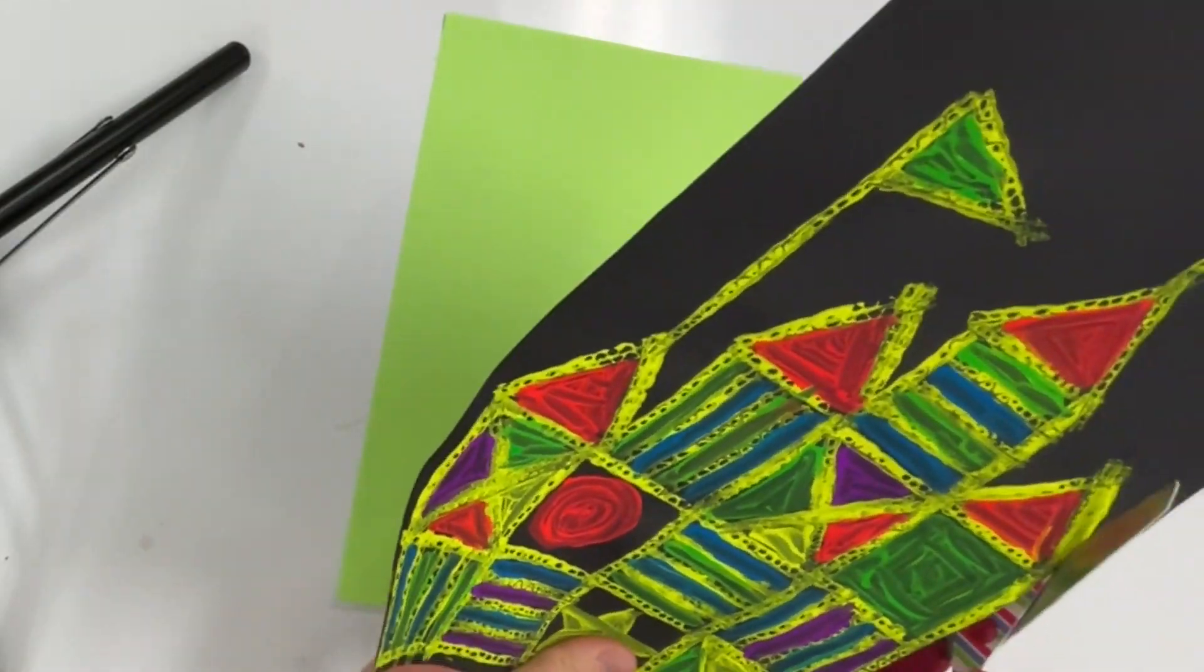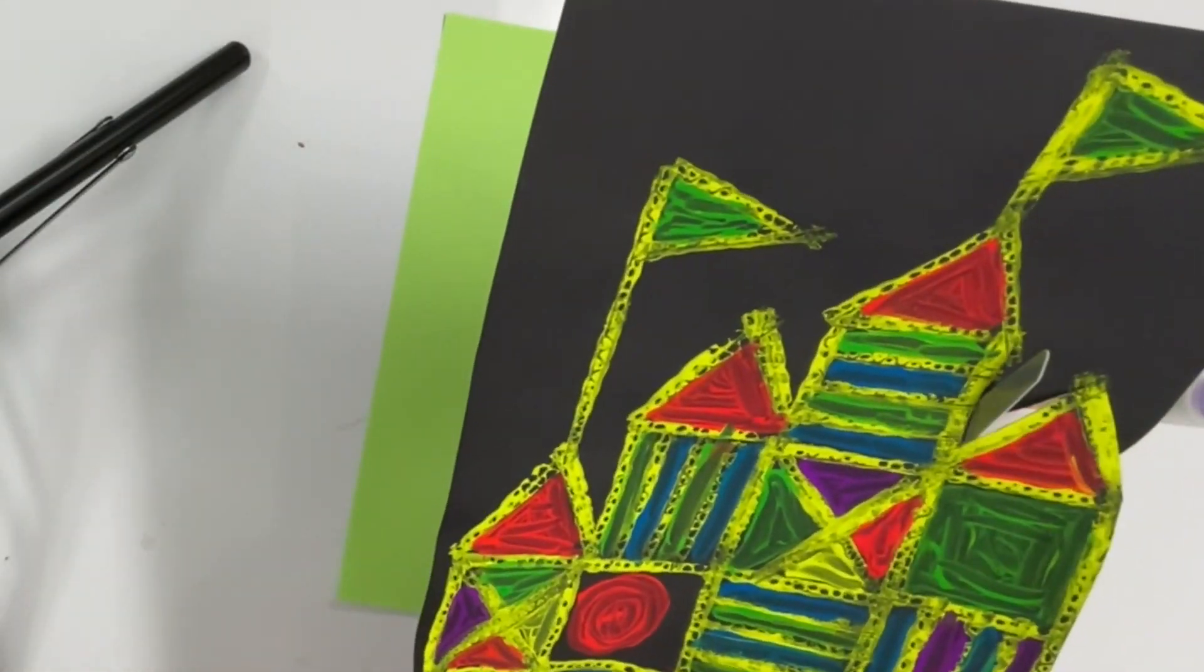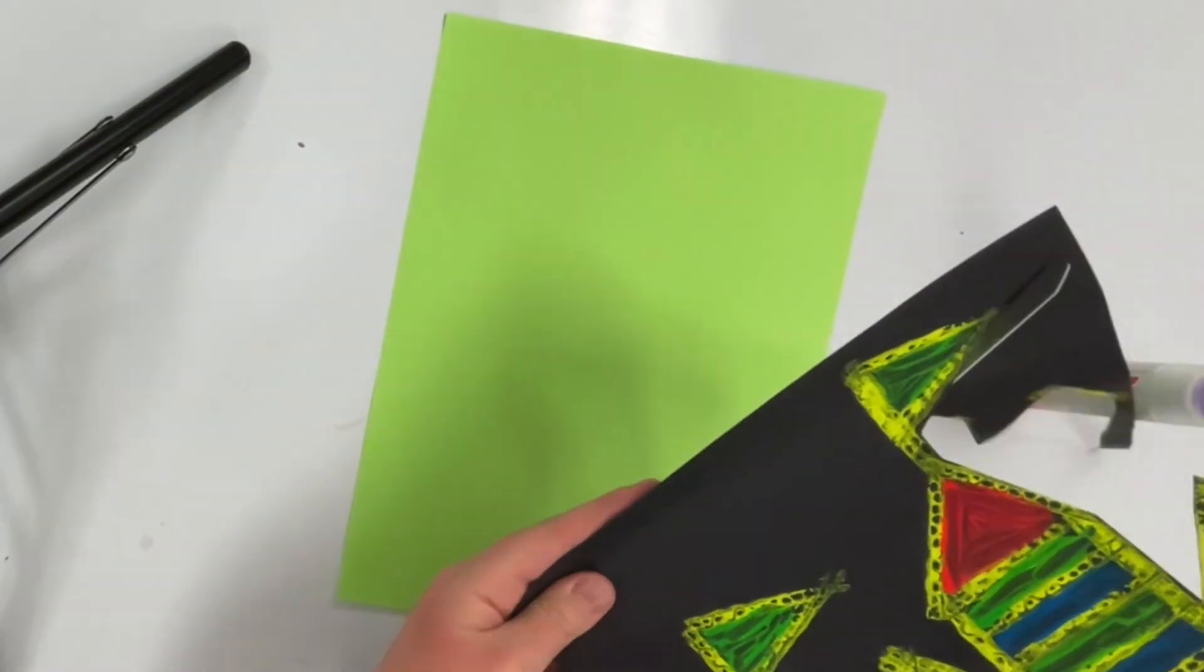When my castle painting is dry, I'll cut it out and glue it onto a colorful background.